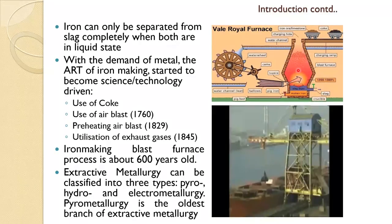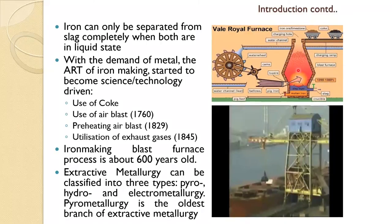The use of air blast came because as the bloomery became taller, more and more air was needed. With the invention of the steam engine, high-power blowers became available, and that is how the air blast came into iron making. To increase efficiency, preheating of the air blast started somewhere in 1829. It was found that a lot of heat was being wasted in the form of exhaust gases, so utilization of that also started somewhere in 1845.